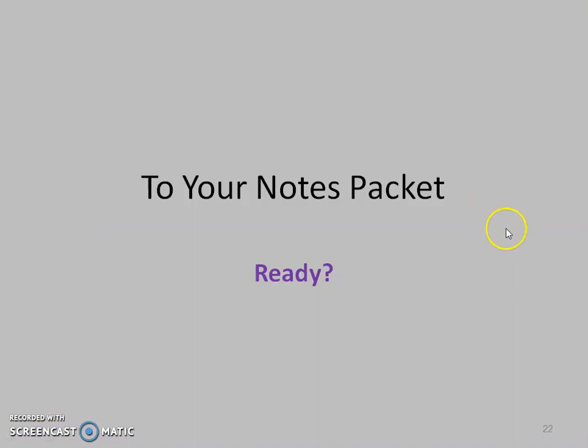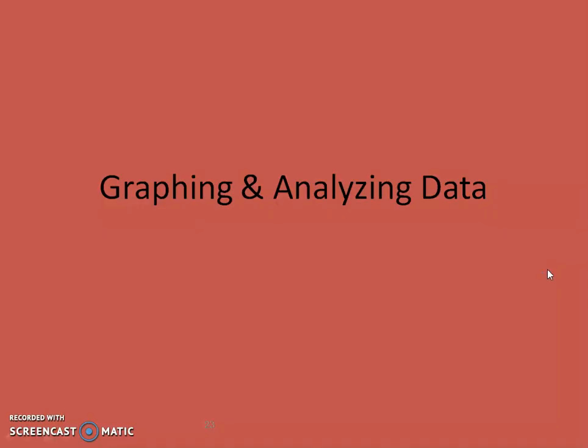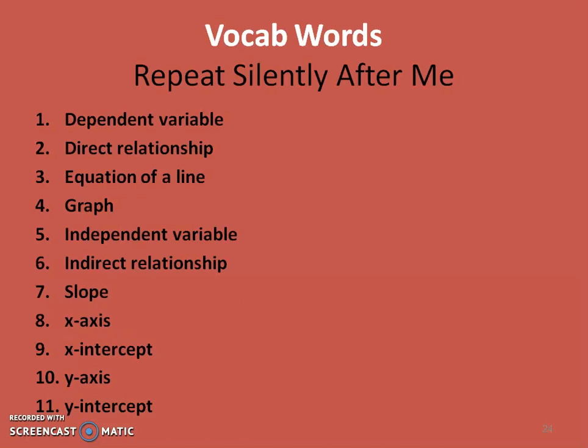On to your packet of notes. If you don't have them out, pause the video and get them out. The first section is about graphing and analyzing data and vocabulary. Repeat after me — silently if you're in class, or out loud at home. The vocabulary terms are: dependent variable, direct relationship, equation of a line, graph, independent variable, indirect relationship, slope, x-axis, x-intercept, y-axis, y-intercept.